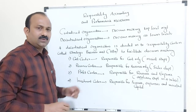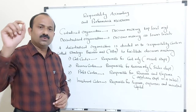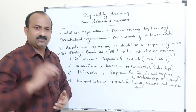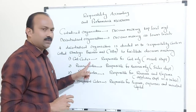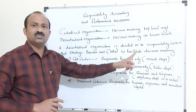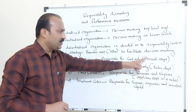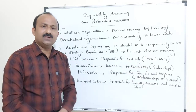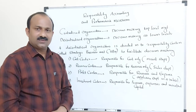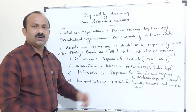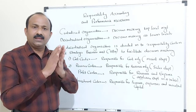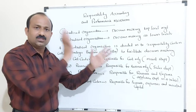Cost Center: Cost is one of the most important elements in the factors of production. A Cost Center is responsible for cost only. For example, the maintenance department is only a cost center because they are responsible for cost only and are not making any revenue for the organization.